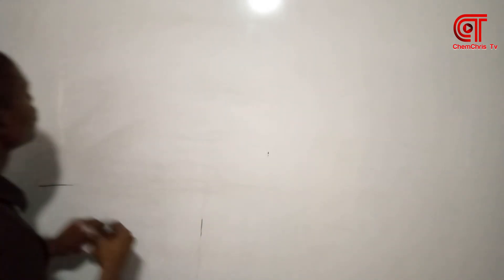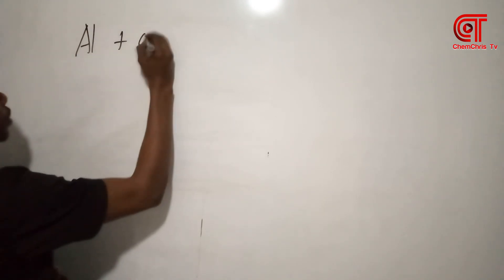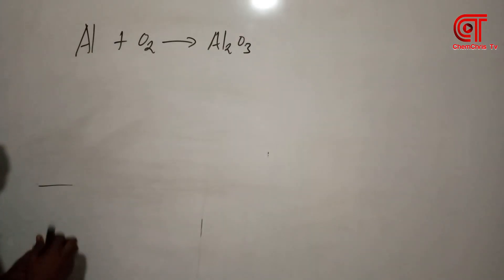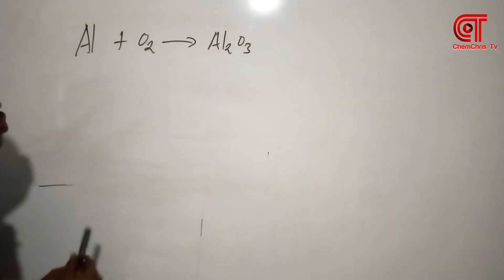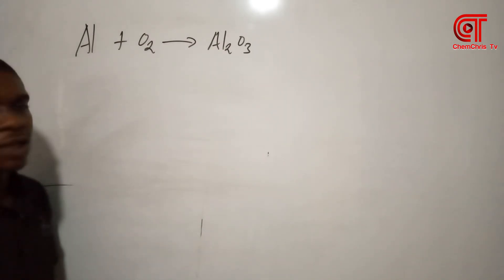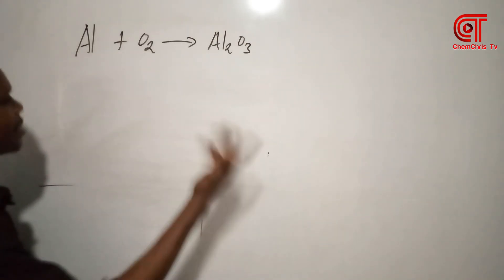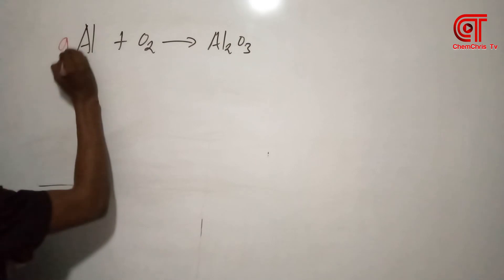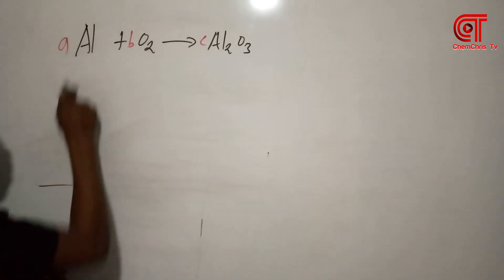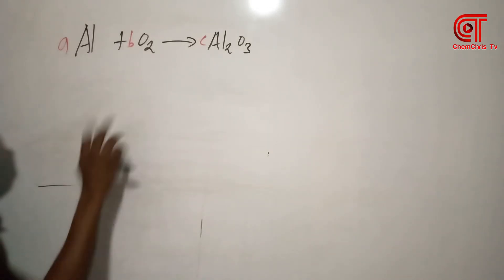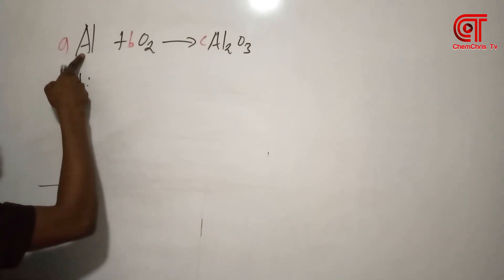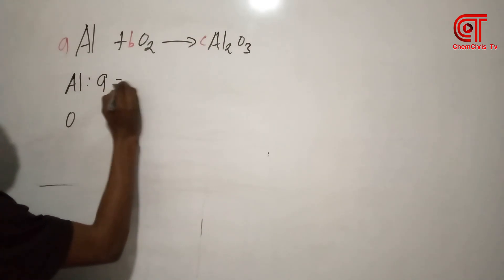Now if you are asked to balance this equation — aluminium reacting with oxygen to give aluminium oxide — using the Ojibre method, how do you do that? Remember the first step is to assign alphabets to all the species. I like using A, B, C but you can use X, Y, Z. Here we have two elements: aluminium and oxygen, and we assign A, B, and C to the species.